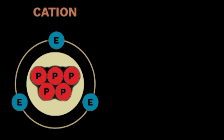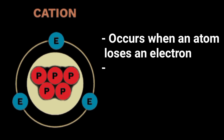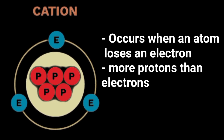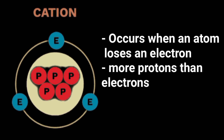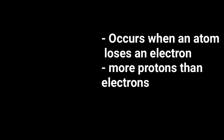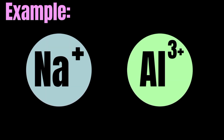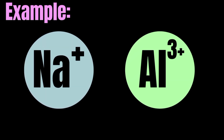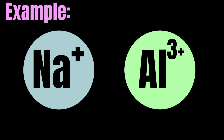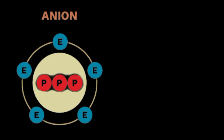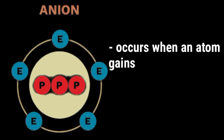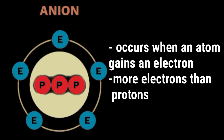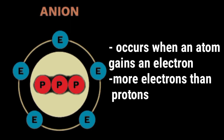A positive ion, or cation, occurs when an atom loses an electron — they have more protons than electrons. A negative ion, or anion, occurs when an atom gains an electron — they have more electrons than protons.